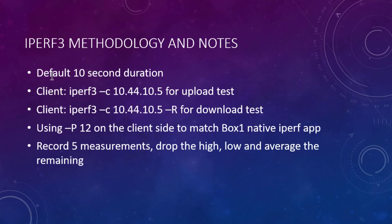Methodology — this is the important part, because every tool is going to give you different numbers. If you don't document the methodology and the tool, nobody can ever duplicate it or help you in the future. The default is a 10-second duration — that's the command line default and I'm sticking with it. On the iPerf client side, just dash C and the IP of the server for an upload test. For the download test, add a capital R. I'm also adding dash P 12 for 12 parallel sessions, because Magic Box one's native iPerf app uses 12 sessions by default — so I'm making things comparable. We record five measurements, drop the high, drop the low, and average the three remaining numbers.